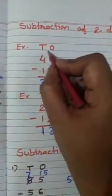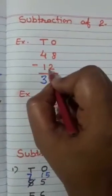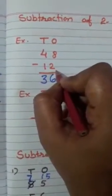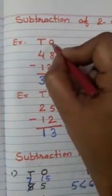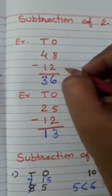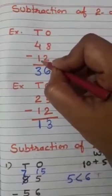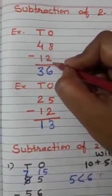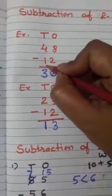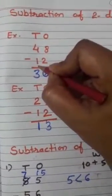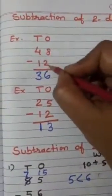Now, subtraction of 2 digit numbers. Look here, one example: 48 minus 12. I write here 1s and 10s, because this is a 2 digit number. So we have to subtract 1s with 1s and 10s with 10s. Aapko 1s me se 1s ko subtract karna hai and 10s me se 10s ko subtract karna hai. So let's start, 8 minus 2.